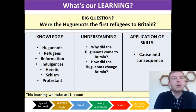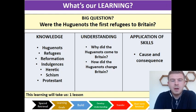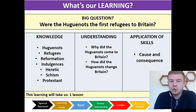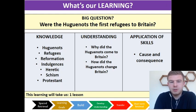Some of those words we'll have heard before, some of them will be completely new. The understanding questions we need to be able to answer are: why did the Huguenots come to Britain, and how did the Huguenots change Britain? Our skill is cause and consequence.